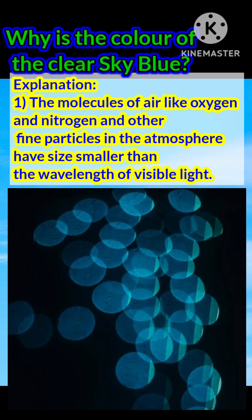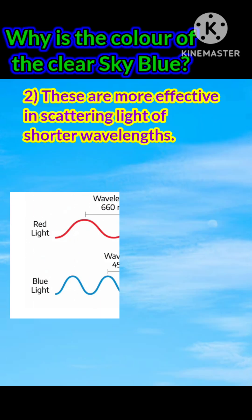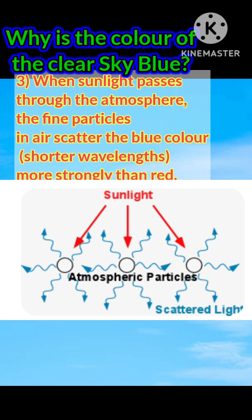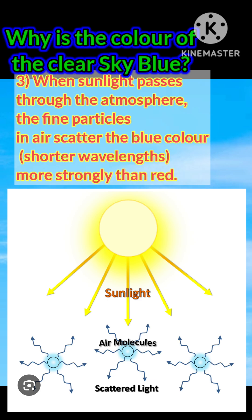These particles are more effective in scattering light of shorter wavelengths. When sunlight passes through the atmosphere, the fine particles in air scatter the blue color (shorter wavelengths) more strongly than red.